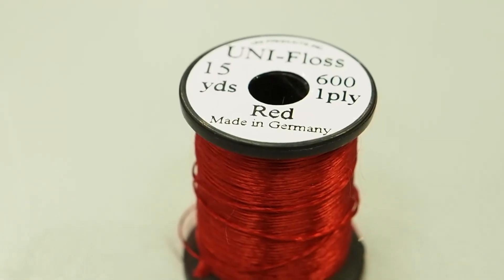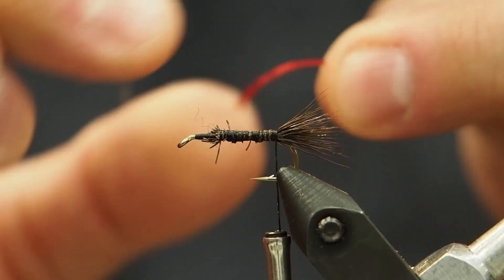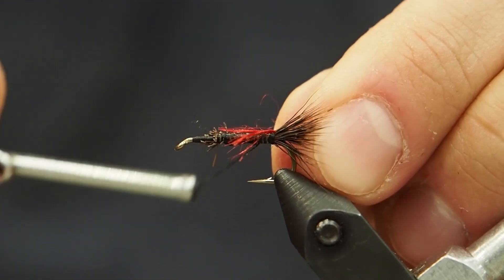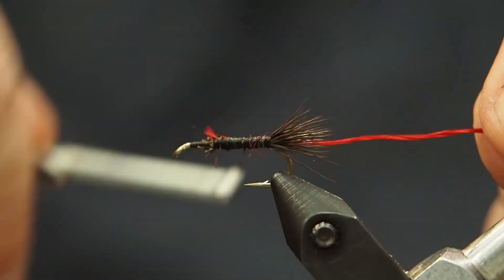Now we're going to go to our floss. This is going to make a nice royal red body, but you could use dubbing. You could use many different colors of floss. You've got a lot of choices here. This is going to give us a nice slick body design. So I'm just tying in that floss.